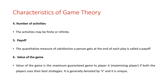The last characteristic is the value of the game. At the end, we get the value of the game. The value of the game is the maximized guaranteed gain to player A — the maximizing player. If both players use their best strategy, it is generally denoted by V and it is unique.